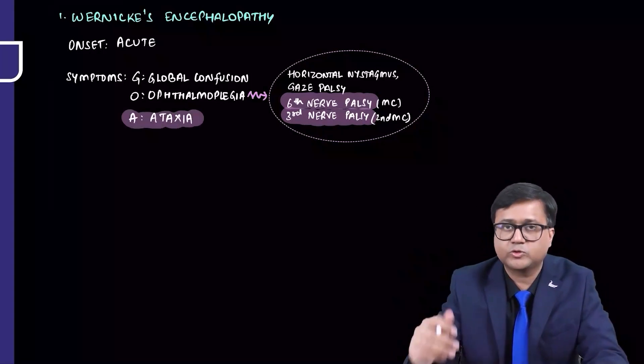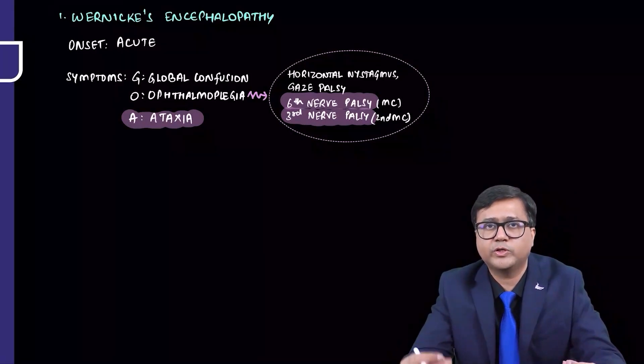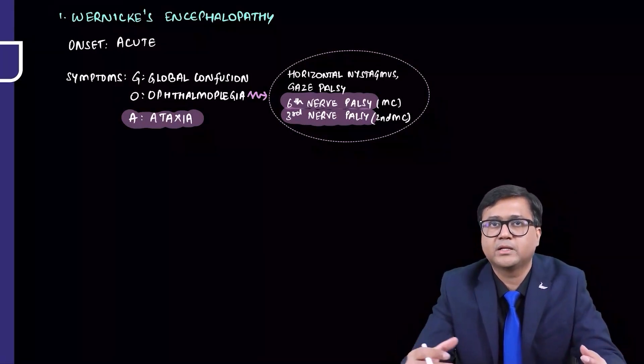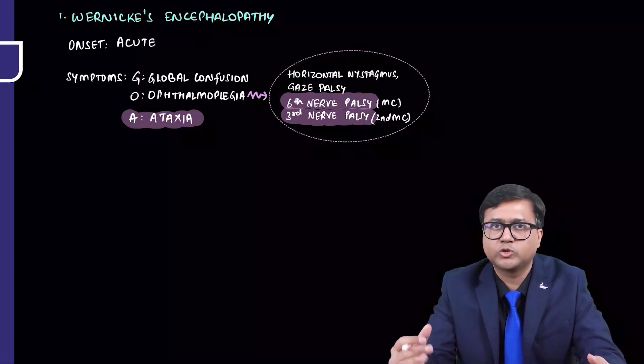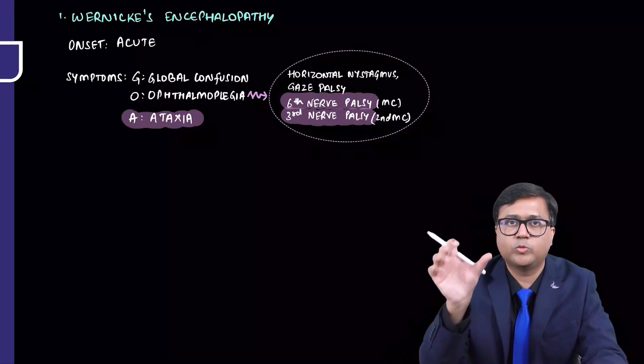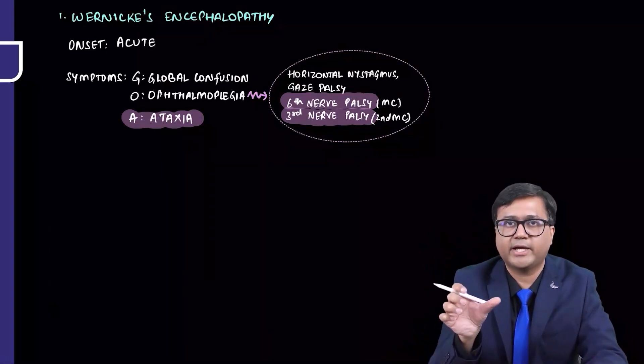Then A is ataxia. Patient may come with history of falls. Patient is not able to move properly. There is problems in gait. These are the symptoms seen in Wernicke's encephalopathy: global confusion, ophthalmoplegia, and ataxia.